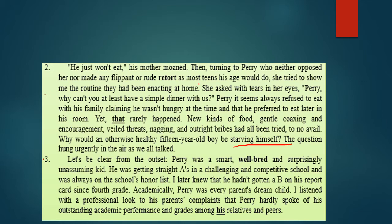Paragraph three. Let's be clear from the outset: Perry was a smart, well-bred boy — well-mannered, well brought up, and surprisingly unassuming. He was getting straight A's in a challenging and competitive school, and was always on the school's honor list. He hadn't gotten a B on his report card since fourth grade. Academically, Perry was every parent's dream child. The narrator listened with a professional look to his parents' complaints that Perry hardly spoke of his outstanding academic performance and grades among his relatives and peers.